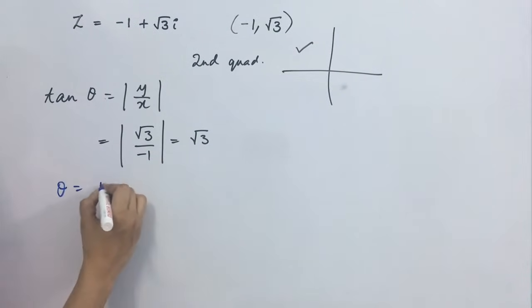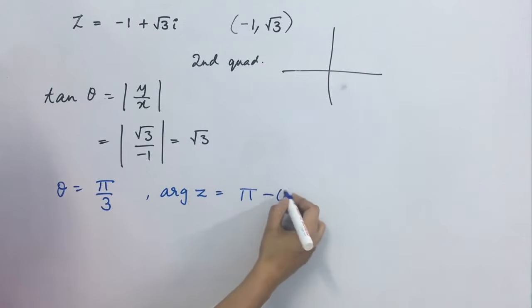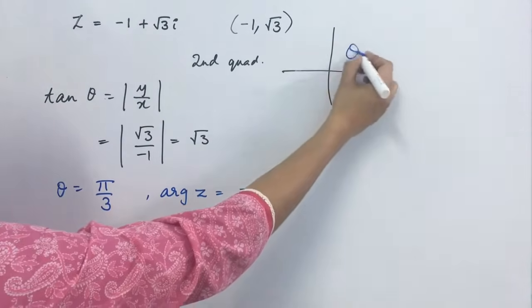Therefore, theta is equal to pi upon 3. Now, argument z will be pi minus theta. Since we have this table. Our z is in second quadrant.